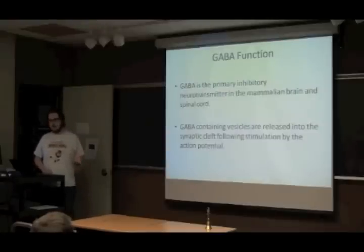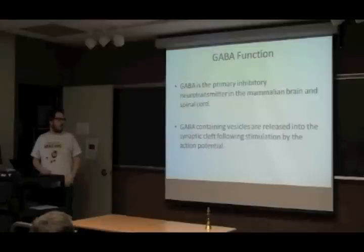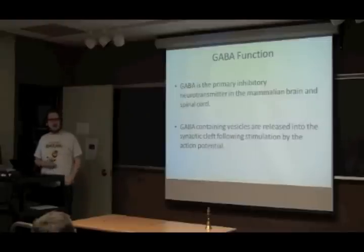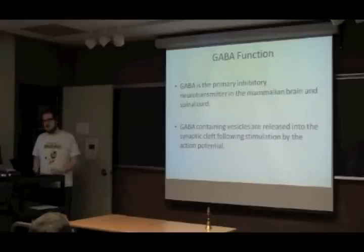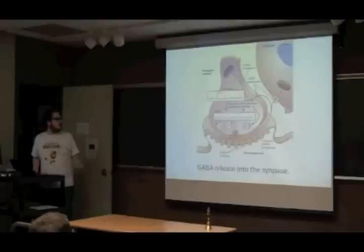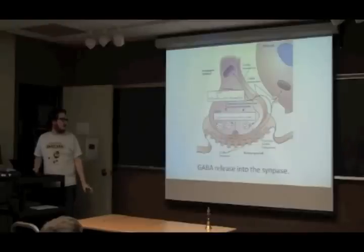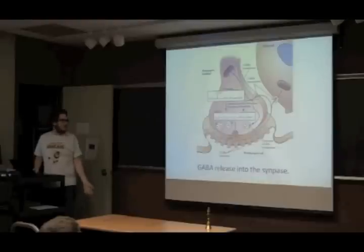Like all other neurotransmitters, GABA is kept in vesicles — little organelles inside the cell. The action potential, which is the electrical signal coming along the axon, comes along and tells the vesicles to release the neurotransmitter into the synapse. Those little circles in the diagram are the vesicles that have GABA in them. The action potential releases their contents into the synapse, and then GABA binds to its receptors — that's how it has its effect.